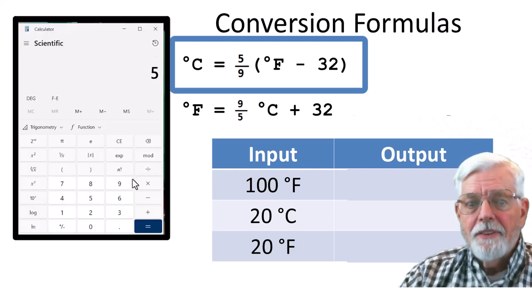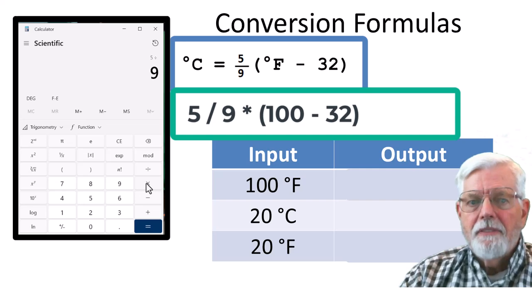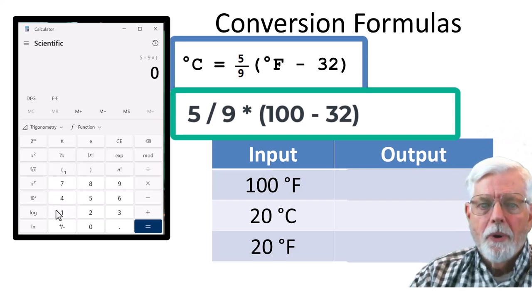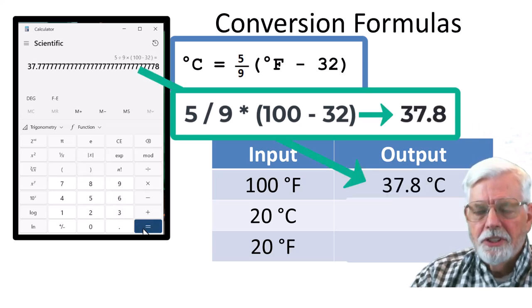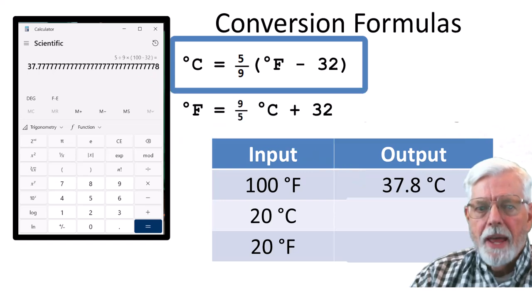Let's try some conversions. Change 100 degrees F into Celsius. 5 divided by 9 times open parentheses 100 minus 32 close parentheses equals 37.8 degrees Celsius. Rounded up to one digit past the decimal.